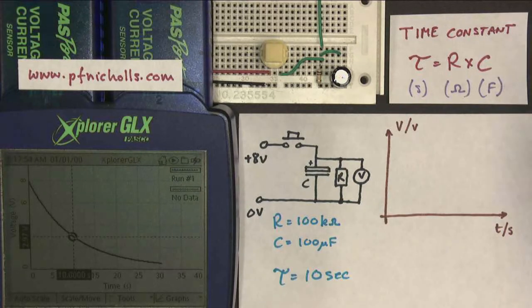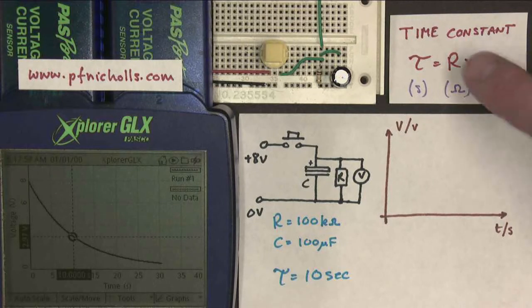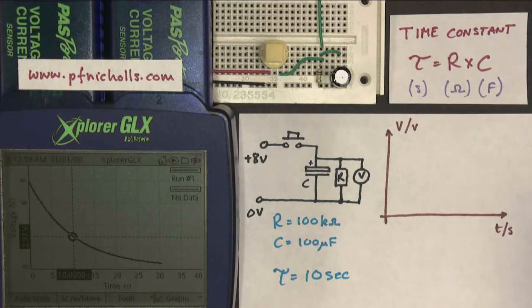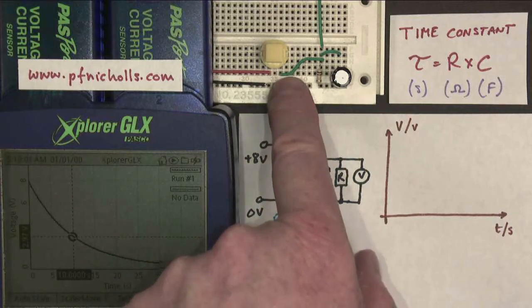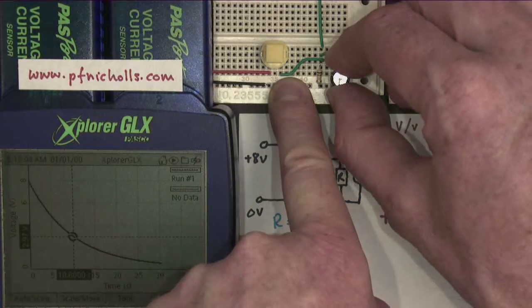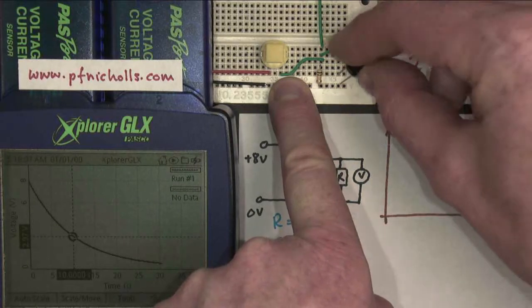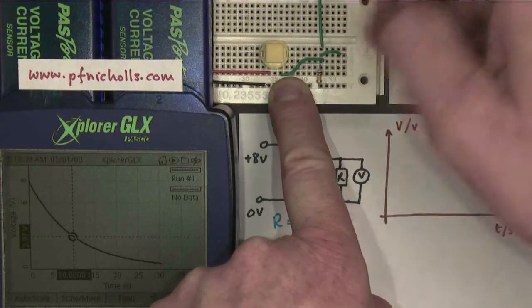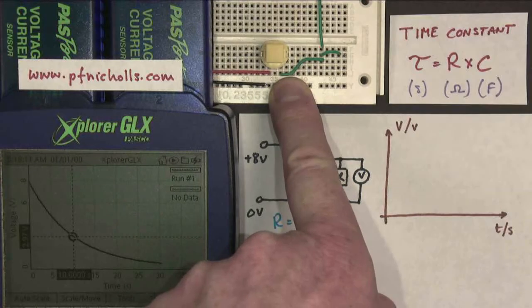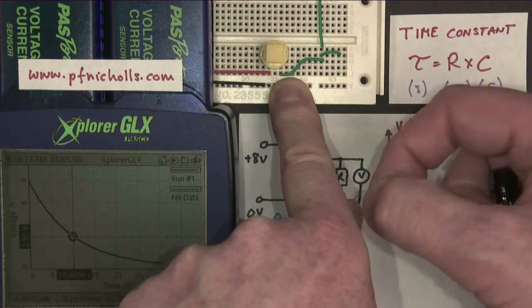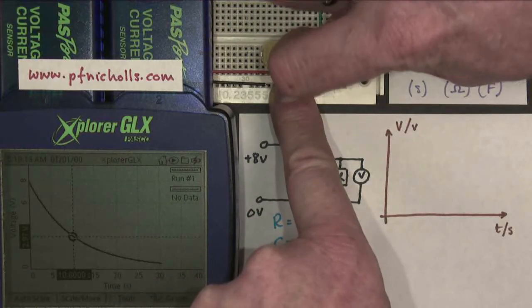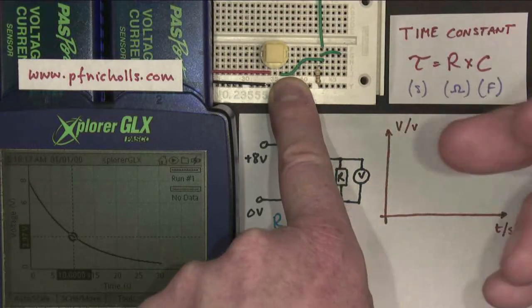Now, we're going to do some more of that later. If I change the values of R and C, the time constants would change. But I'm going to change them in such a way that they still have the same time constant. So I'm going to take out my 100 microfarad capacitor and replace it with a 220 microfarad capacitor. I'm going to take out my 100k resistor and replace it with a 47k resistor.